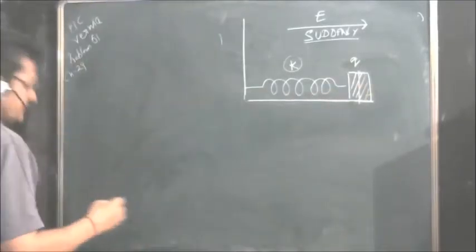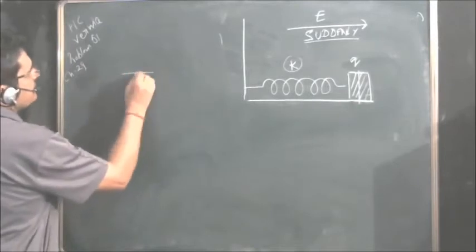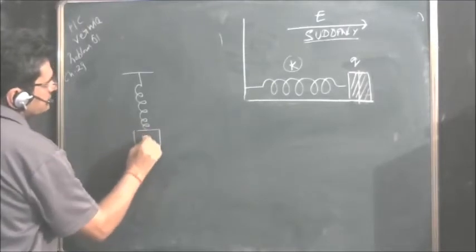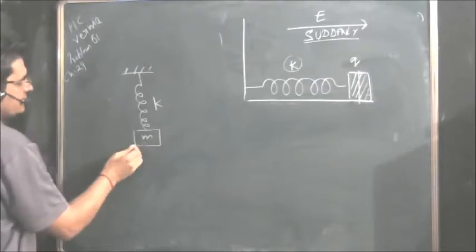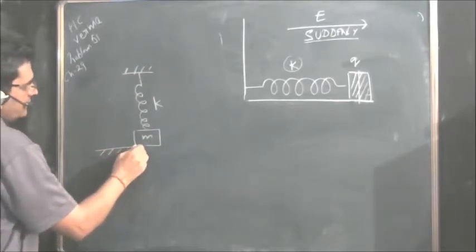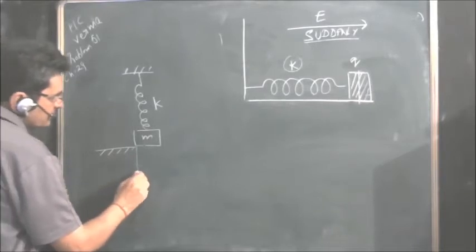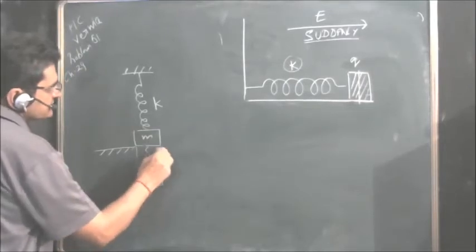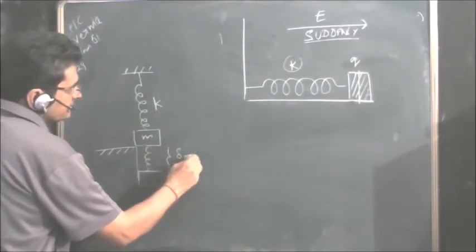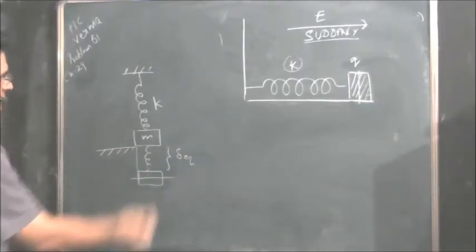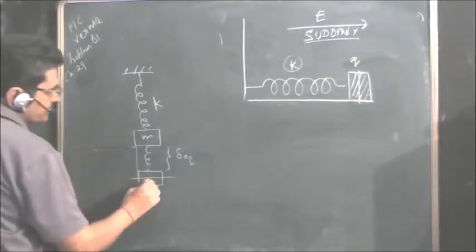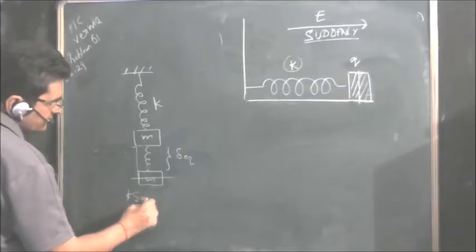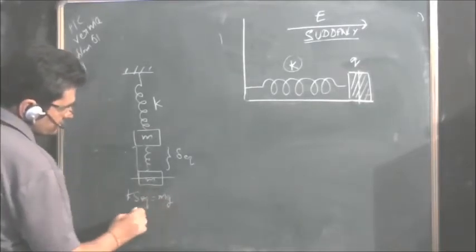Before doing that, let me explain some basics. Take a spring with a mass M and spring constant K. You hold this mass via a support and gradually allow it to come down until the spring reaches its equilibrium extension Delta equilibrium, and it does not go further down.